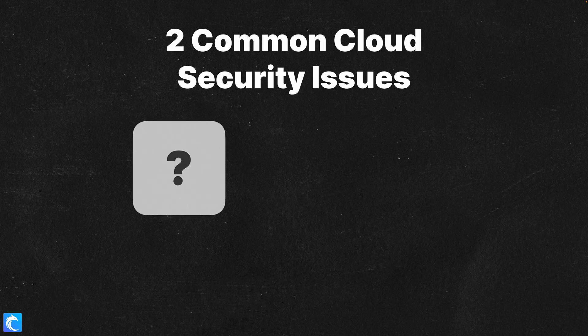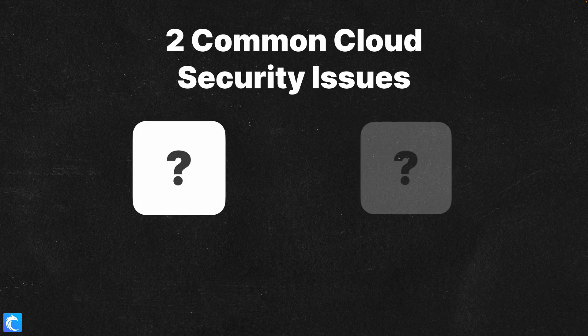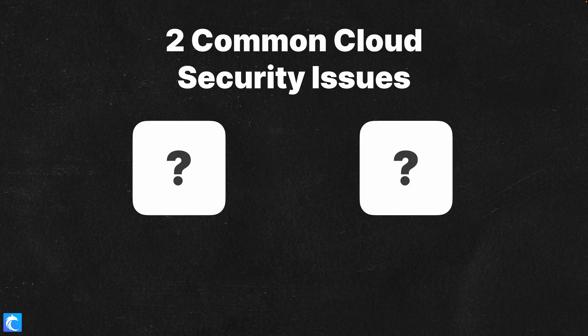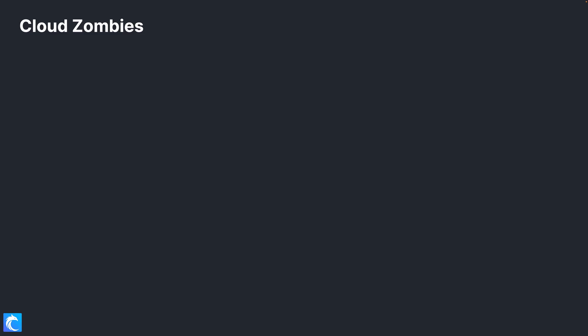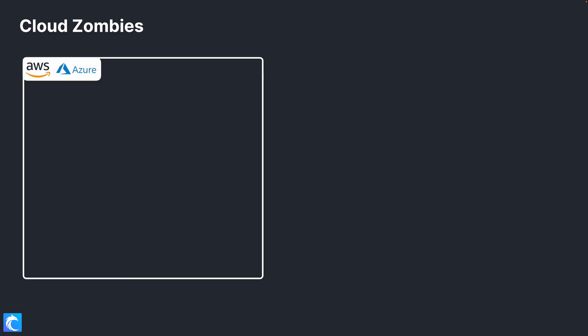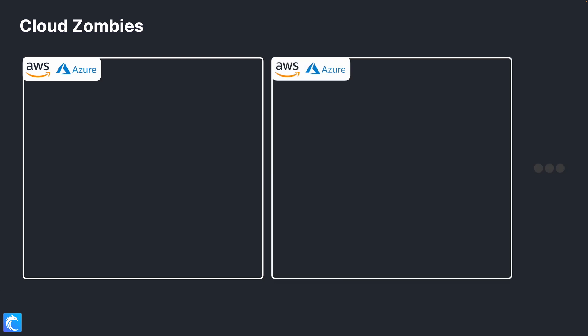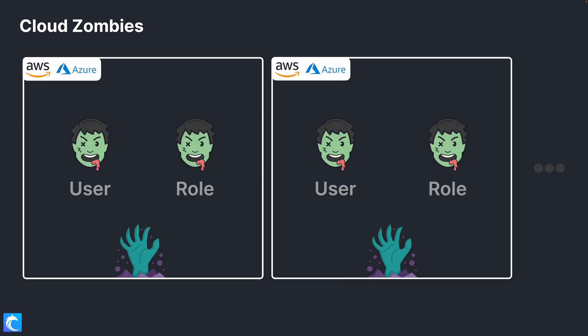Let's talk about two cloud security issues that pretty much everybody running in the cloud experiences at some point or another — the first being cloud zombies. Over time, even if you just have one account but especially across dozens or hundreds of cloud accounts, organizations will start to collect zombie resources.